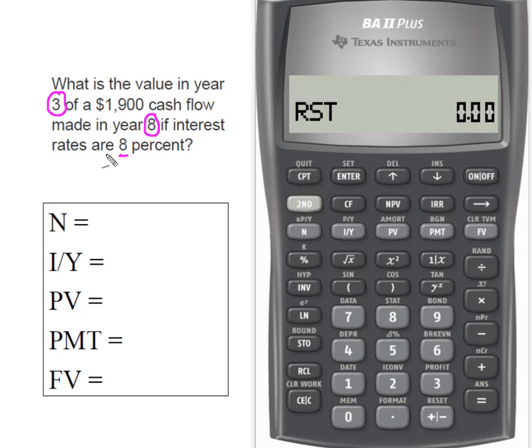So I'm going to use my time value money keys on my BA2+. The first thing I need is N. So that's the number of periods, in this case years, that we're going to move our cash flow. So from year eight back to year three is a period of five years.